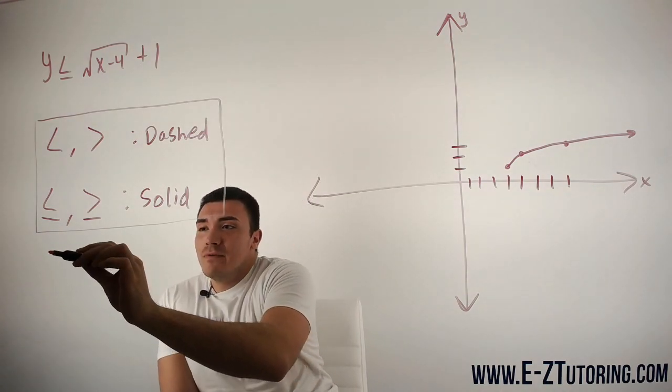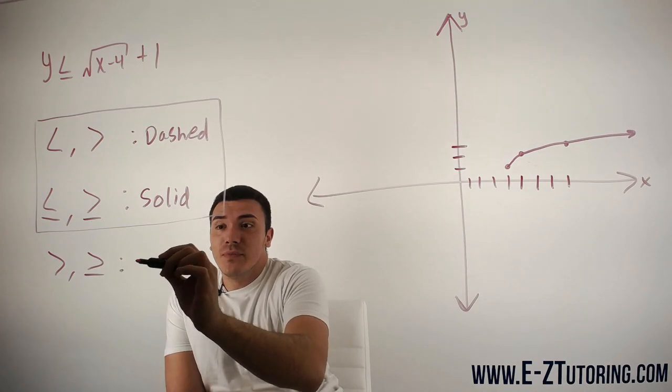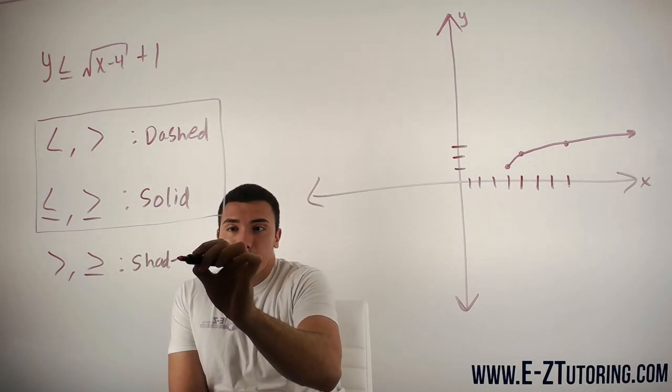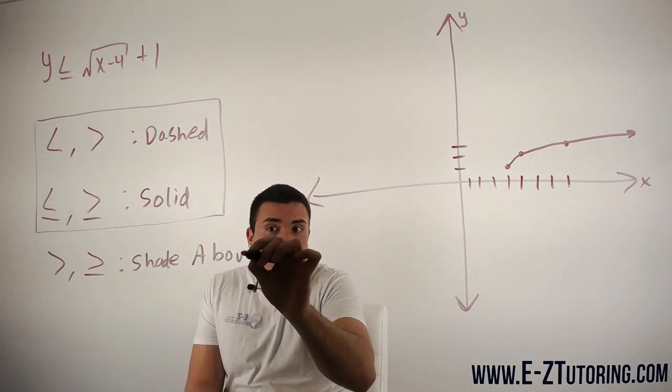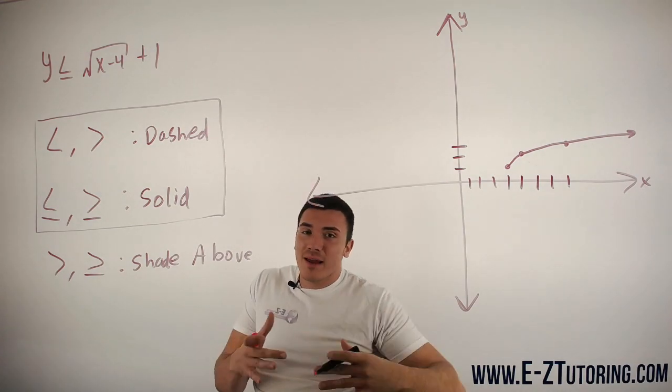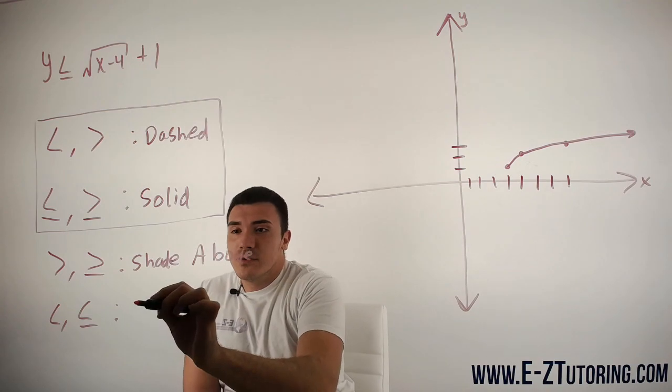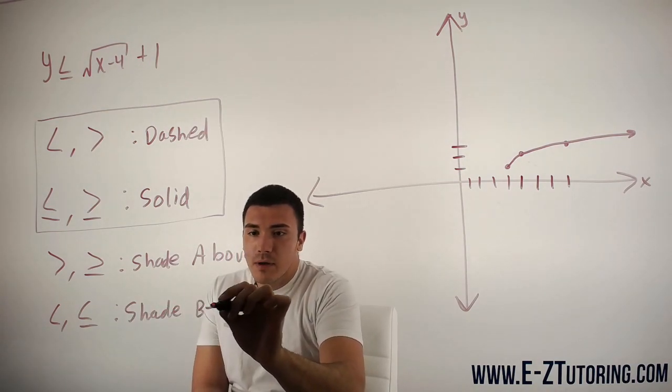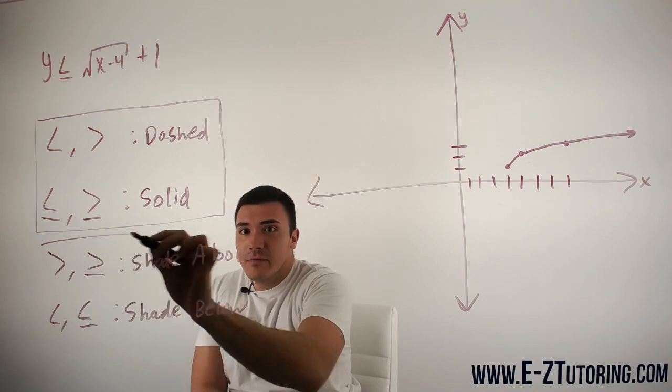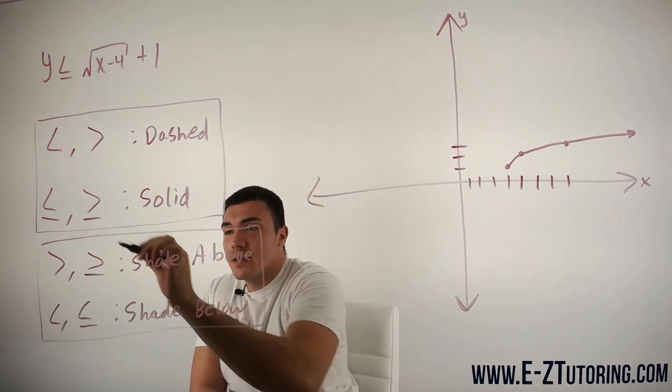If you have greater than or greater than or equal to, you will shade above. It's pretty simple. If it's greater than, you just go above. If it's less than or less than or equal to, all you do is you shade below. These are two very important rules for graphing inequalities.